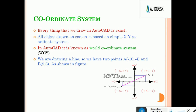If you want to draw a line from minus 10 comma minus 4 to 9 comma 6 — now minus 10 is the X-axis and minus 4 is the Y-axis. That is X-axis minus 10 and Y-axis minus 4. In that point it is taken as the first point, and the next point is taken to draw a line. It is the Cartesian coordinate system.